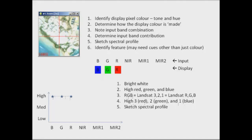We sketch the spectral profile — a feature sitting at the top of the graph. Then we need to identify that feature, and using other cues not just the spectral information, I know that that's an urban area or artificial surface.